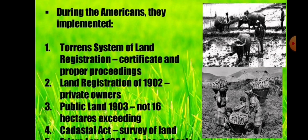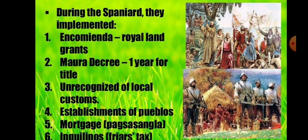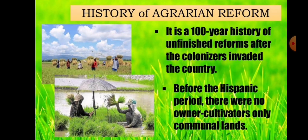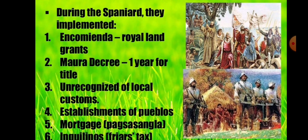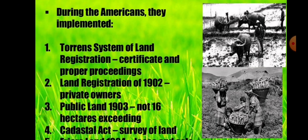During the American period, what was implemented regarding agrarian reform includes: first, the Torrens System of Land Registration with Certificate and Proper Proceedings. Second, the Land Registration Act of 1902 for Private Owners. Third, the Public Land Act of 1903, not exceeding 16 hectares. Fourth, the Cadastral Act — Survey of Land.